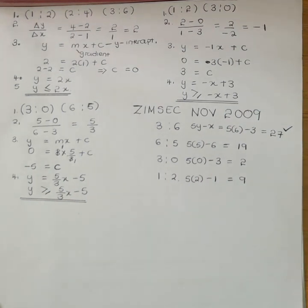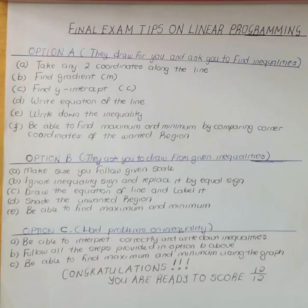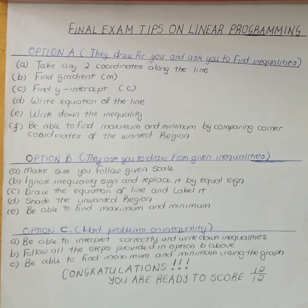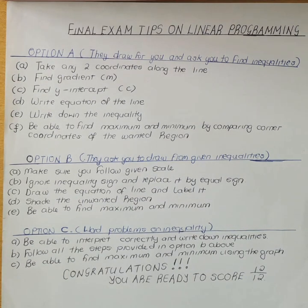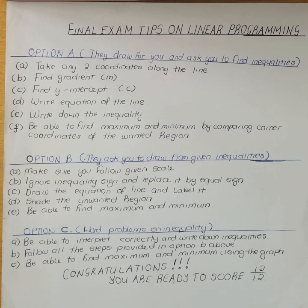We are done with option A, where they draw the graph for you. Next we move on to option B, where they ask you to draw from given inequalities. When they ask you to draw from given inequalities, make sure you follow the given scale. The steps are: ignore the inequality sign and replace it with an equal sign, draw the equation of the line and label it, shade the unwanted region, and be able to find maximum and minimum.